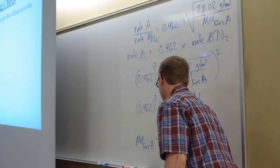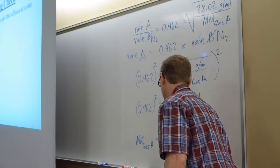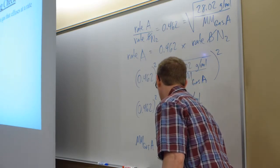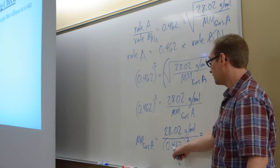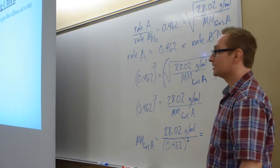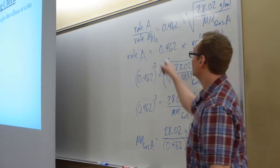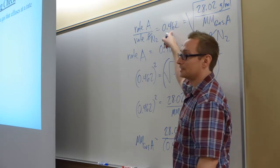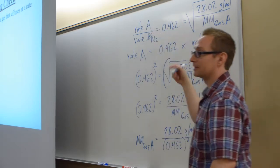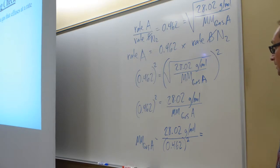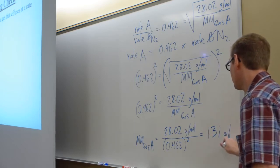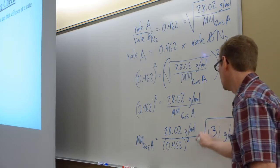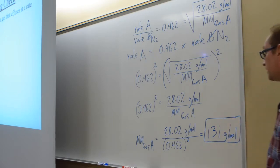And then we have 0.462 squared. Are there any units in this 0.462? The answer is no, because this is a ratio of velocities and the velocity needs to cancel right there. So we have 131 grams per mole, that comes from that.